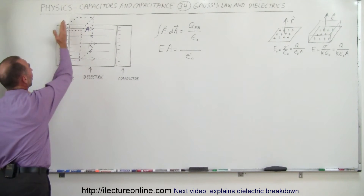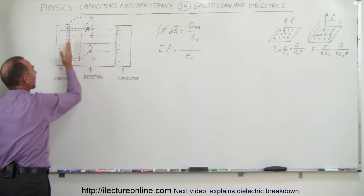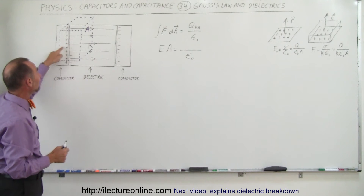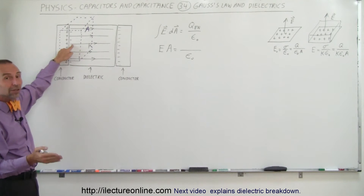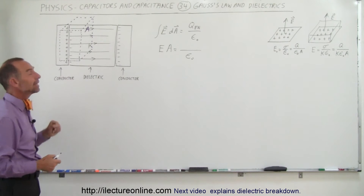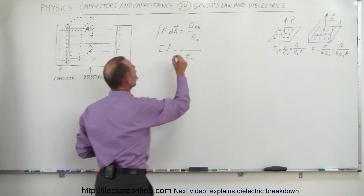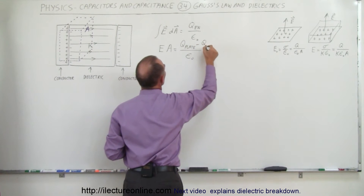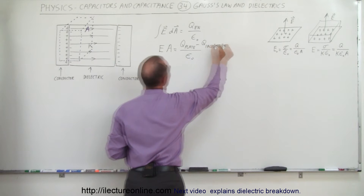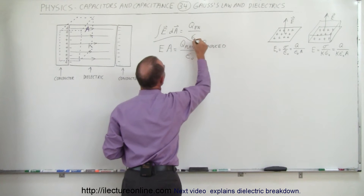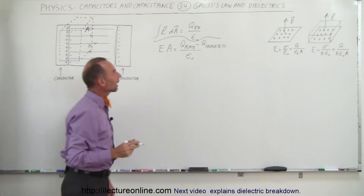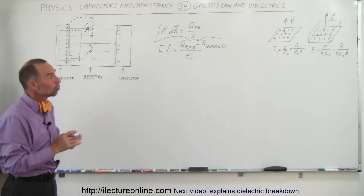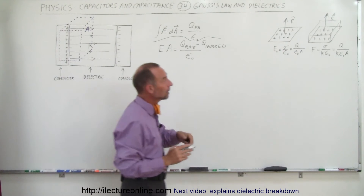We have to add up the charge on the plate and the induced charge on the dielectric. Since they are opposite in sign, we subtract the induced charge from the charge on the plate. So the charge enclosed equals Q on the plate minus Q induced.